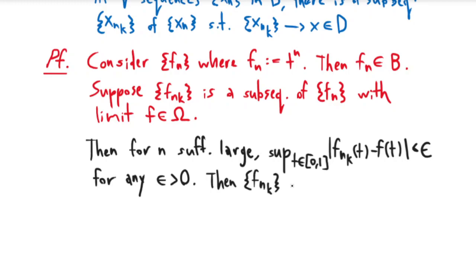This is what it means to converge in the supremum norm: it just means that you converge uniformly. So then in particular this also means that f_{n_k} converge to f pointwise.